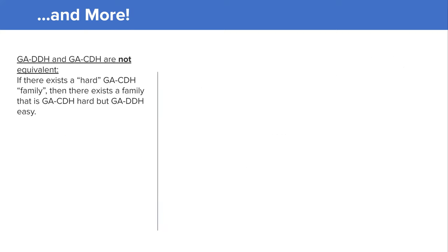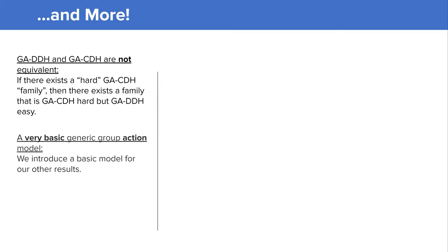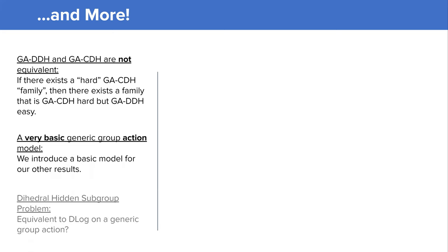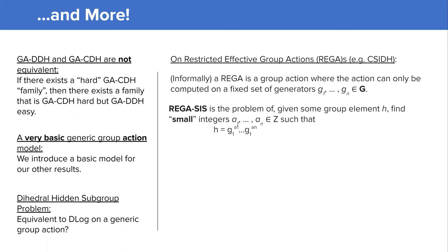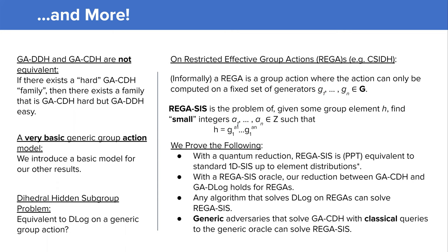We also show that group action DDH and group action CDH are not equivalent. We build a very basic generic group action model, and we conjecture and offer evidence that the dihedral hidden subgroup problem is equivalent to discrete log in this generic model. Finally, we show a number of results on restricted effective group actions, which help explain why a reduction doesn't work directly for them and offers an explanation in the form of an interesting connection to lattices.